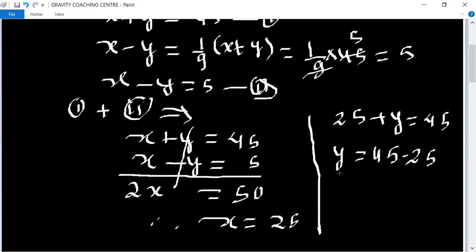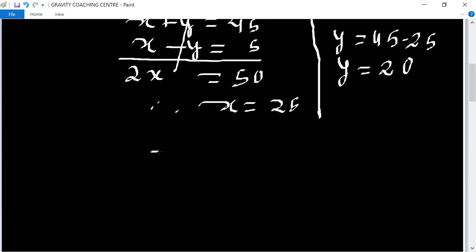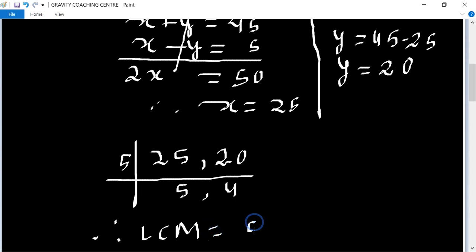Now finding the LCM of 25 and 20. Using the table of 5: 5, 5 and 5, 4. Therefore LCM equals 5 multiply 5 multiply 4...